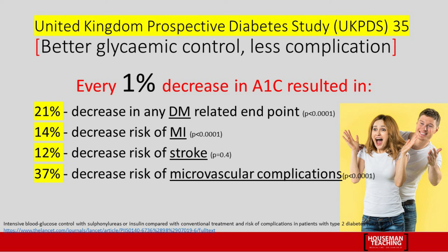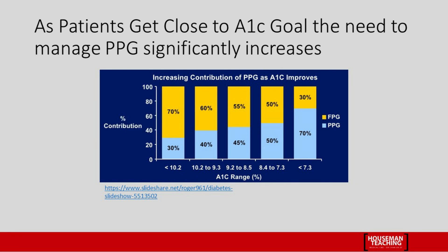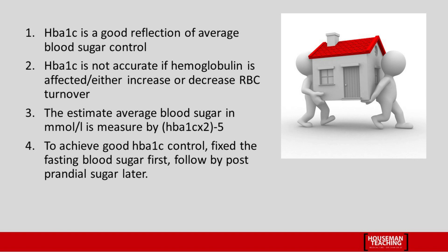As previously explained, every one percent reduction in HbA1c can reduce diabetes mellitus complications. To achieve this, first control the fasting blood sugar level. Once fasting blood sugar is controlled, then focus on controlling post-prandial sugar. This is because when HbA1c is high, fasting blood sugar has more influence over the HbA1c value. Once HbA1c improves, the post-prandial sugar has more influence.